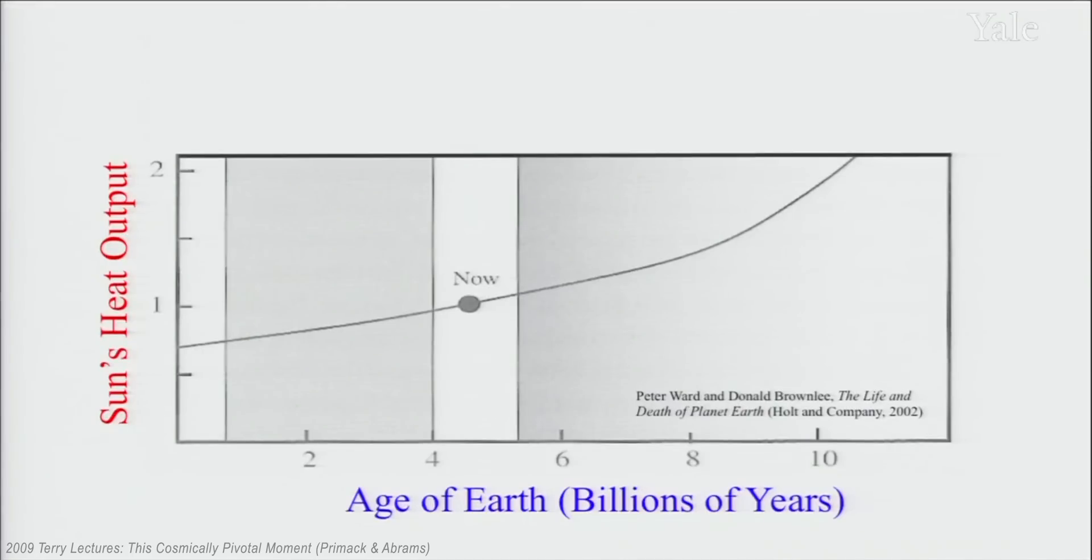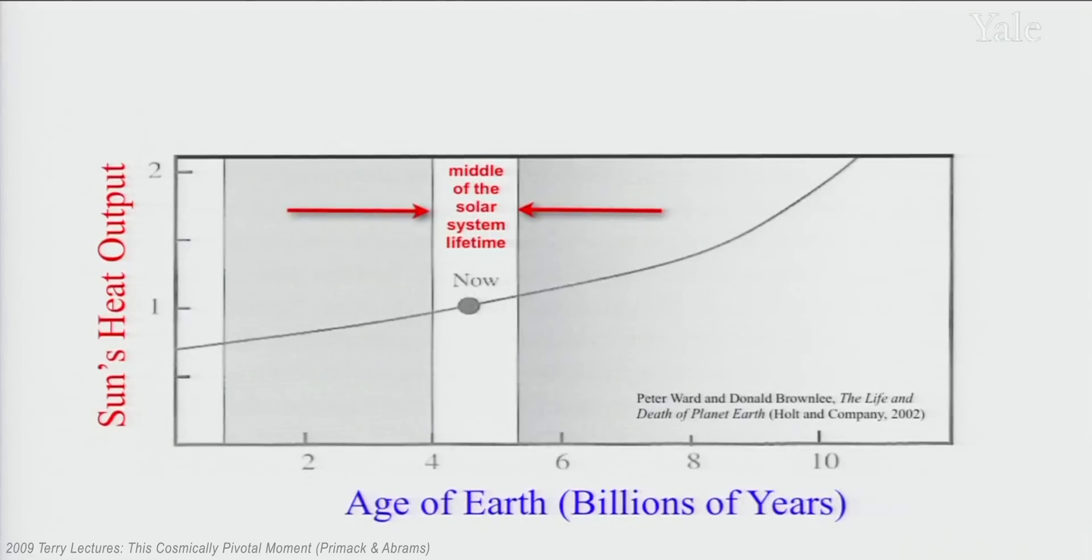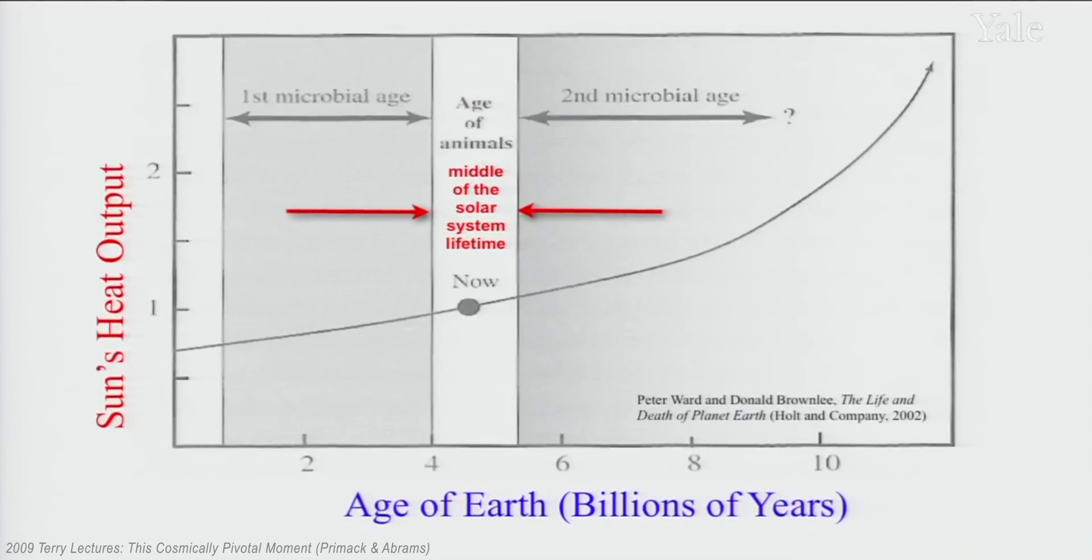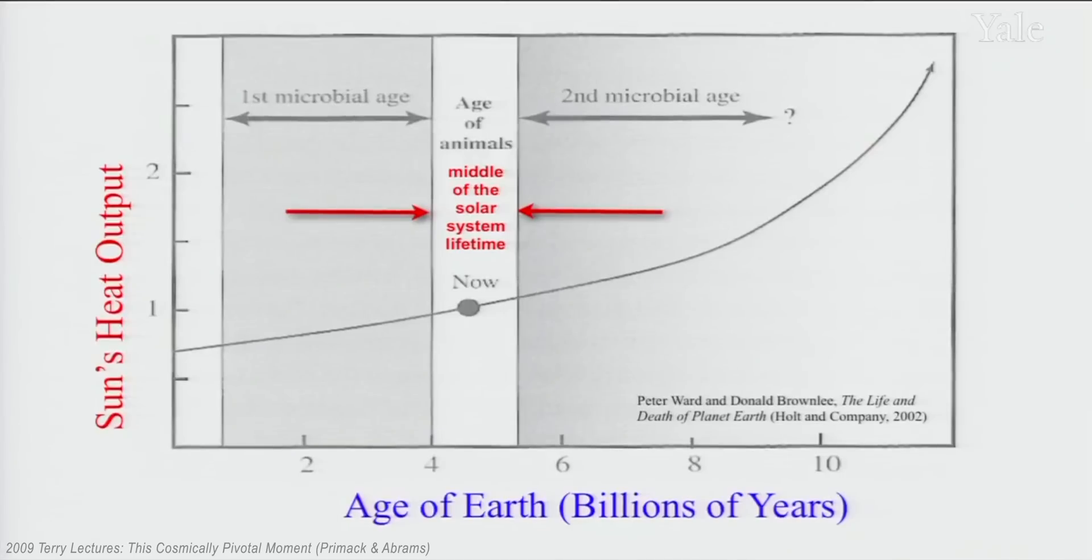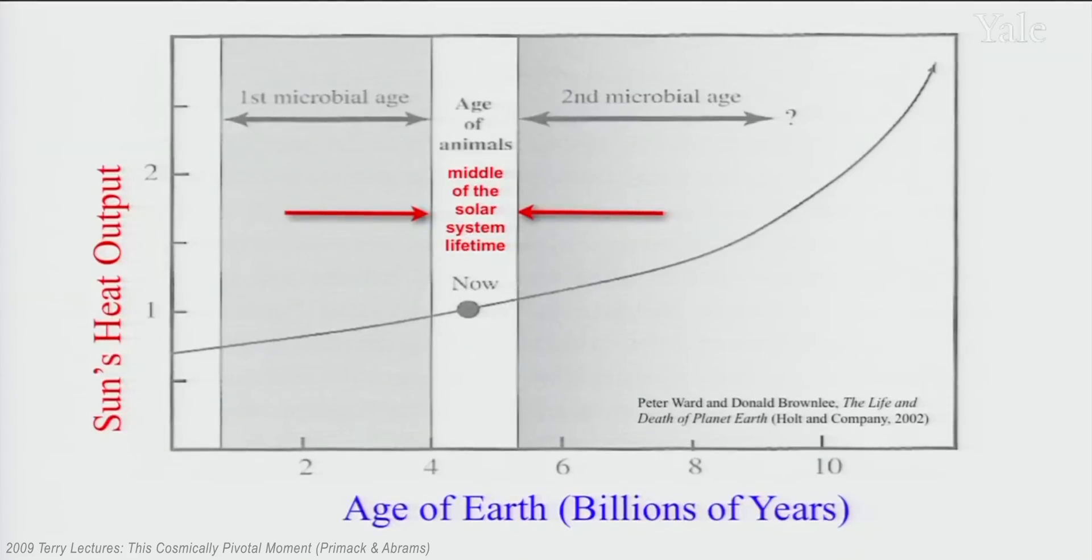We currently reside near the halfway point of our planet's existence. Roughly four and a half billion years ago, our planet came into being. We have approximately six billion more years before our sun expands into a red giant and destroys us. Complex life emerged approximately half a billion years ago, and has another half a billion years until solar radiation poses a threat to the Earth's habitability.